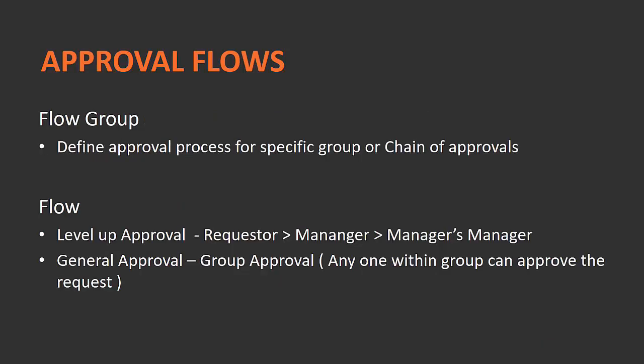Within approval flows there are two key terms: flow group and flow. A flow group is the parent approval process for a specific group or chain of approvals. Within a flow, you configure how the approval should proceed — whether it involves levels of approvals, a general group approval, or two or three stages of approval.